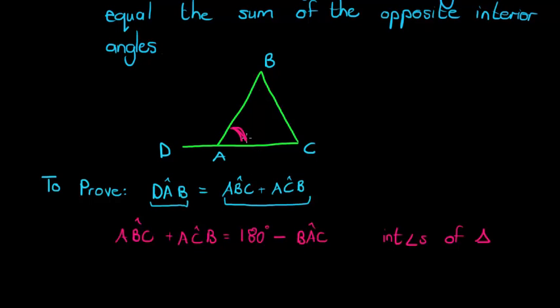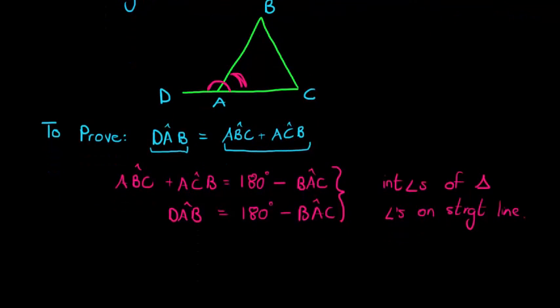And since I know now that that's this one, now I want to use the fact that these two are on a straight line. So then I would say, well, angle DAB is also equal to 180 degrees minus BAC. Different reason, they are angles on a straight line. And now I can see these two have the same expression, which means those two must be equal. DAB is equal to ABC plus ACB.